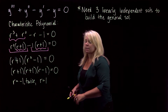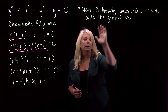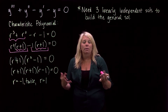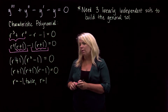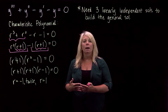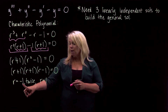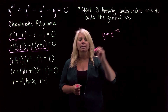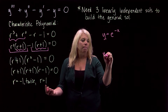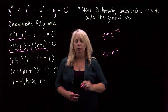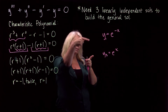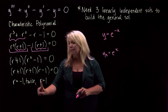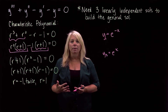Now that we have the zeros of the characteristic polynomial, we can write down three linearly independent solutions to build the general solution. We had a theorem stating that for distinct real zeros of the characteristic polynomial, y = e^(r·x) is a solution. So r = −1 gives y = e^(−x) and r = 1 gives y = e^x. Those give two solutions, but I need three for this third-order equation — so it's important to pay attention to the repeated zero.